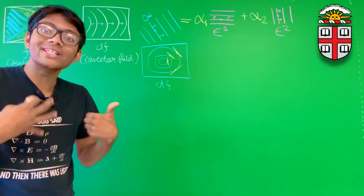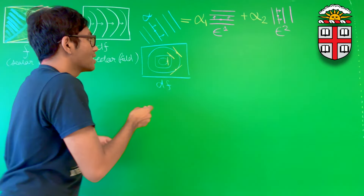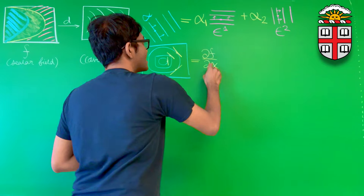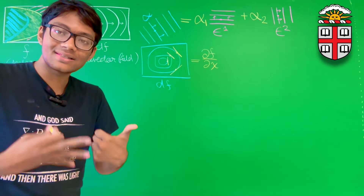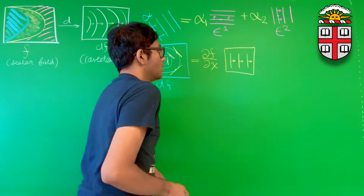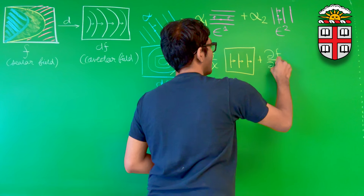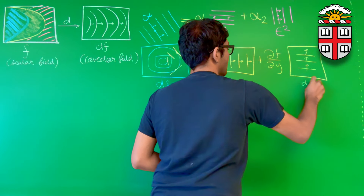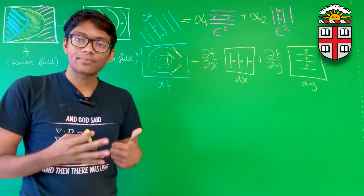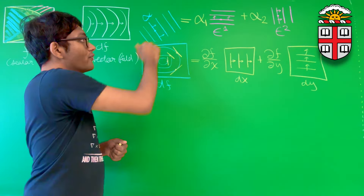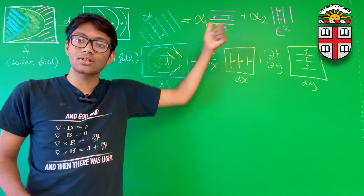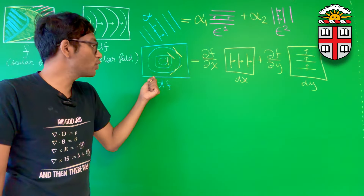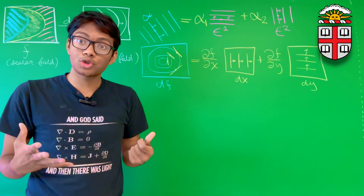We can apply the same principle of linear combinations to co-vector fields — breaking them up into a linear combination of (∂f/∂x) times a dual basis co-vector, plus (∂f/∂y) times the dual basis co-vector corresponding to dy. Just as we can write any co-vector alpha as a linear combination of ε¹ and ε², we can represent any differential form df as a linear combination of dx and dy.